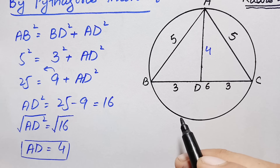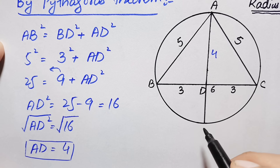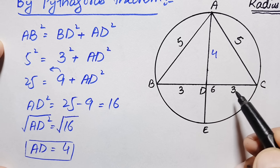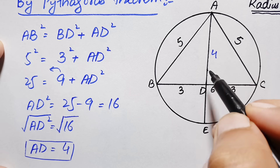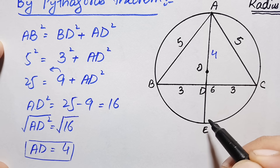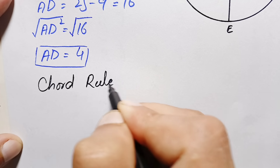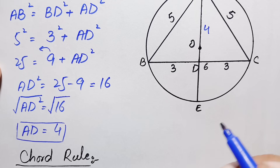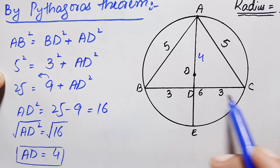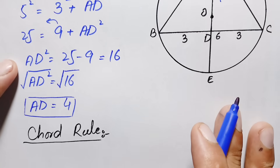Next, we will expand this perpendicular AD so that it connects with the circle. After expanding, let us suppose this new point is E. Remember that perpendicular AD divides BC into two equal segments, so this perpendicular must pass through the center of the circle. Let us suppose the center is O. Now we will find the length DE using the chord rule.